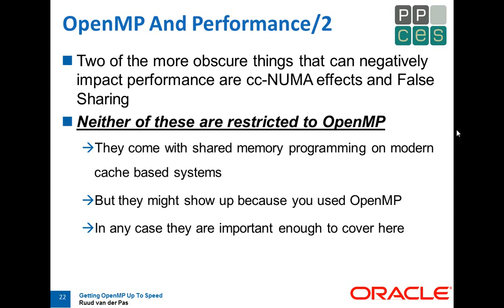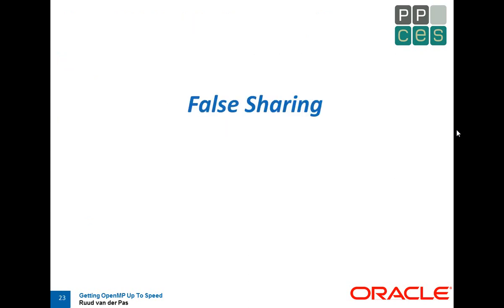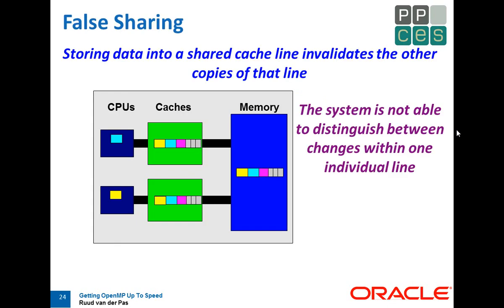It's all basically because we have cache-based systems and memory bandwidth — that's why we have CC NUMA architectures. First, false sharing. In the system, cache lines go back and forth all the time. In my imaginary example, I have two caches, two CPUs or cores. One cache line lives in three different places: it starts in memory, and if one CPU needs the blue element it gets that cache line, and if the other needs the yellow element it gets the same cache line — they want different elements but they happen to be on the same cache line.